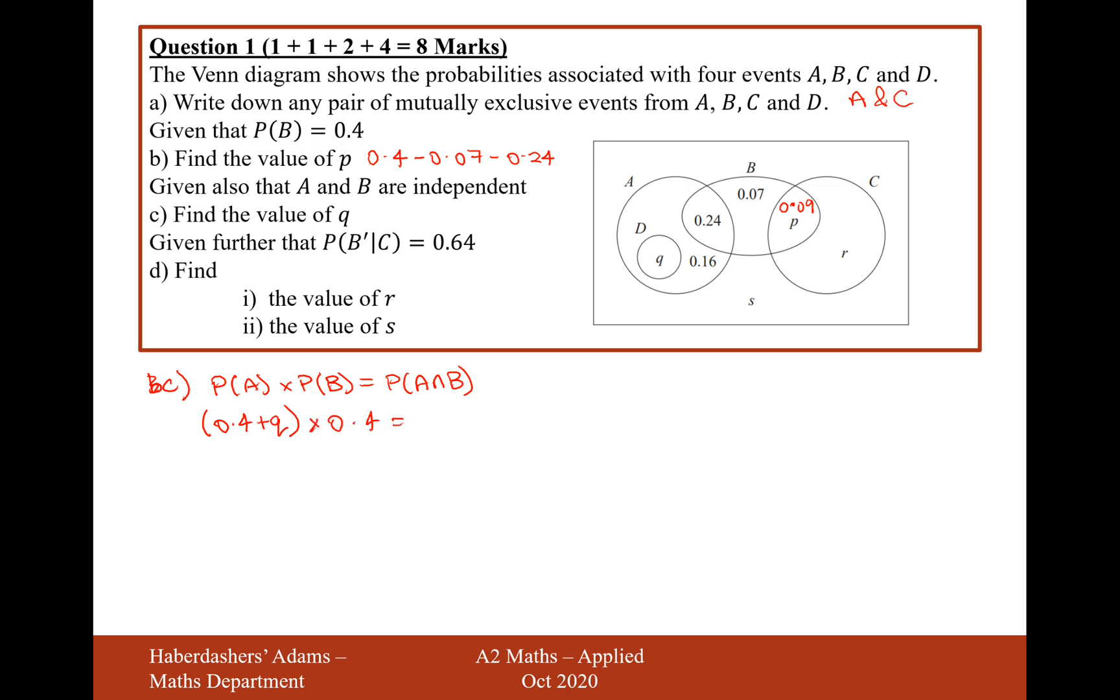We've just been told that previously, equals the probability of A and B. That's the intersection. So this statement of mathematics here should be true. So what I'll do is I'll divide the 0.4 onto the other side. So 0.4 plus Q equals 0.24 divided by 0.4, which is 0.6.